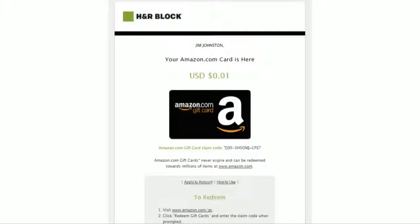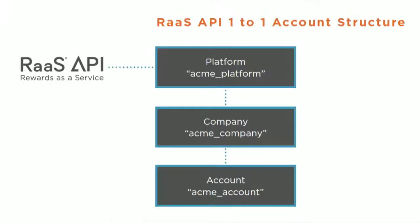The next piece I wanted to highlight is the reward delivery. In this case, the reward is being delivered by TangoCard on an H&R Block branded email template. But we also have the ability to return codes back via the API for delivery within an actual application. The H&R Block example is an example of what we call a one-to-one account structure, where H&R Block is our customer and they want to send rewards to their end users themselves.